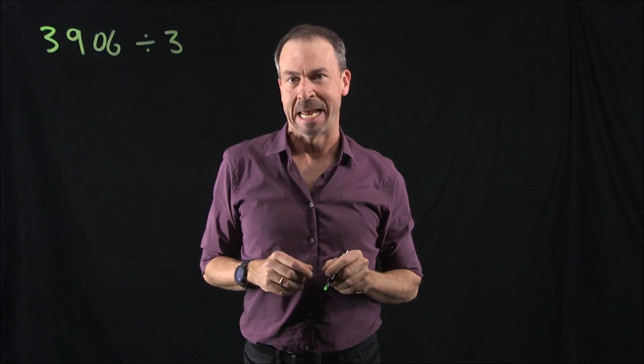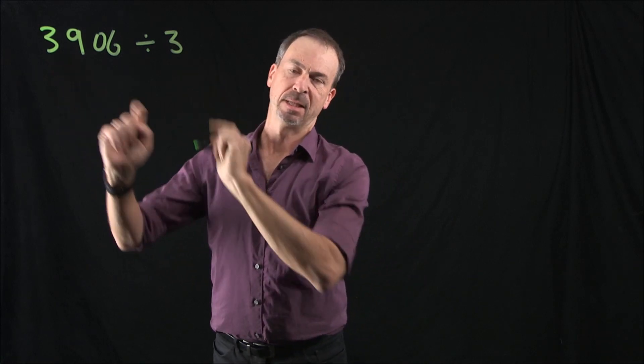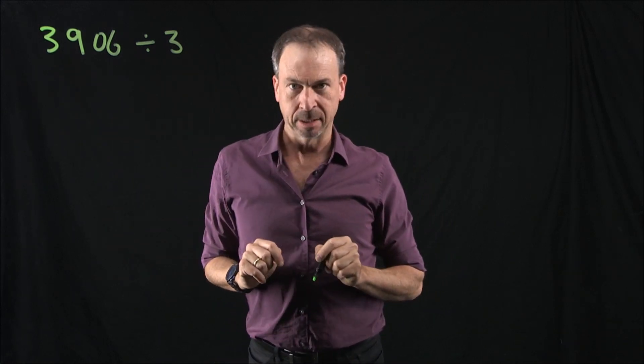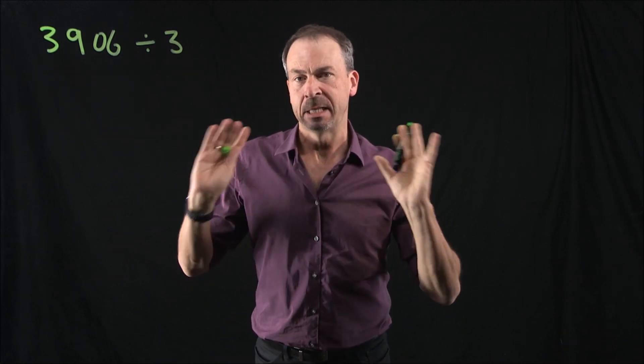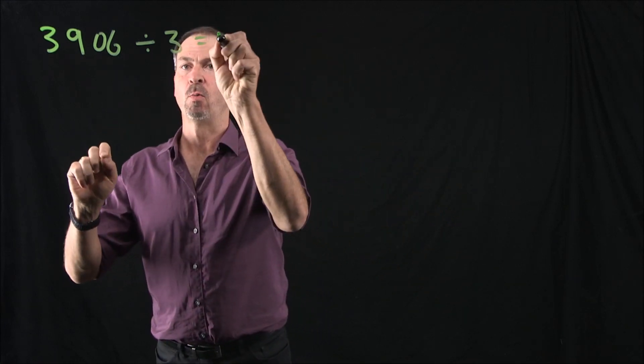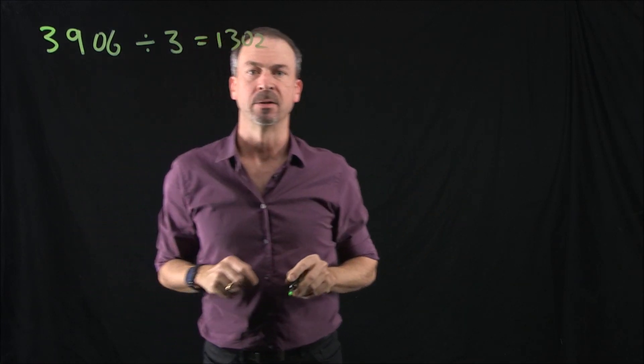Okay, let's explore division in a 10-1 machine. So let me start off with this problem: 3,906 divided by 3. In fact, you can probably see what the answer is going to be right off the bat. It's going to be 1,302.